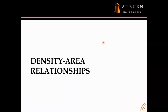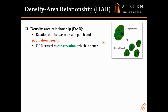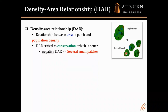Let me start by defining what a density-area relationship is. That's just the relationship between the area of a patch and population density. DAR is critical to conservation. If we only have a finite amount of land for conservation, we've got two questions: do we put it all together in one big patch, or do we break it up into smaller patches? If you have a negative relationship between density and area, larger areas have smaller density, and we'd want many small patches. If we have a positive DAR, we'd want to put all resources into a single large patch.